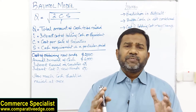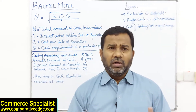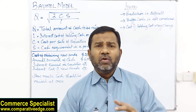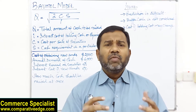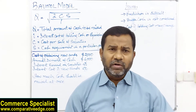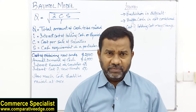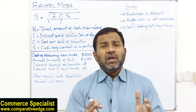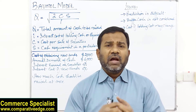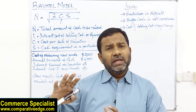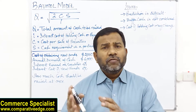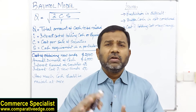The Baumol model is inspired by the EOQ model — Economic Order Quantity — but whereas in EOQ we are looking at how much inventory to order at once, here the formula looks very similar but what we are trying to find out is: if all our money is invested in securities and we need cash, how much of the securities should be converted into cash.